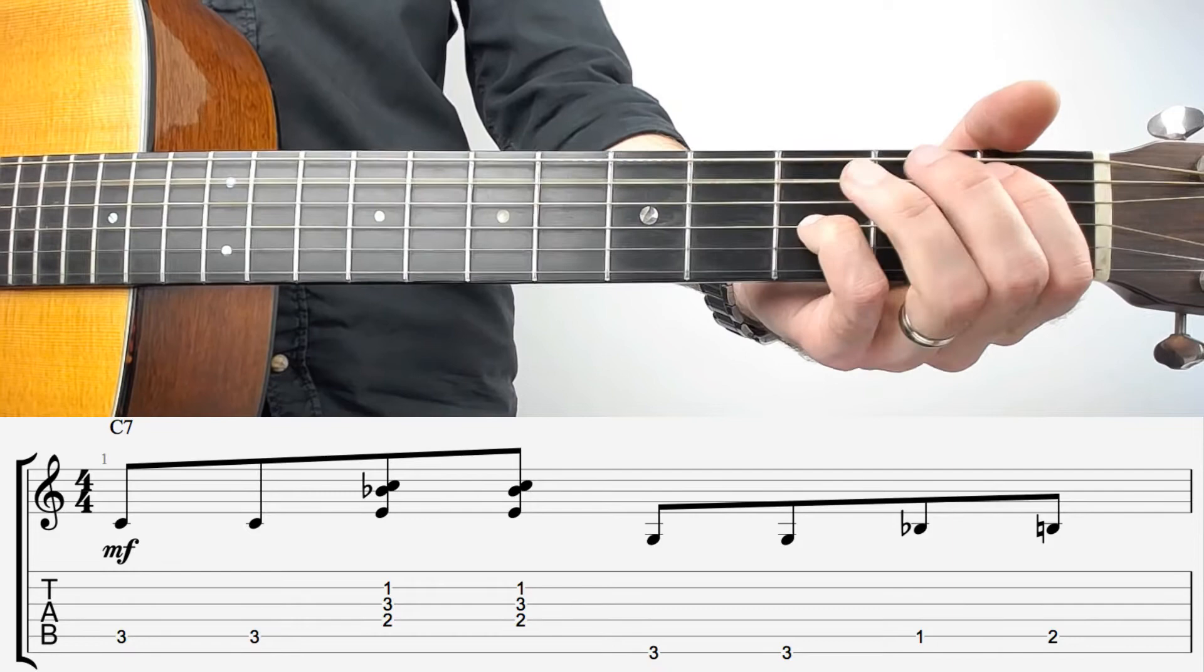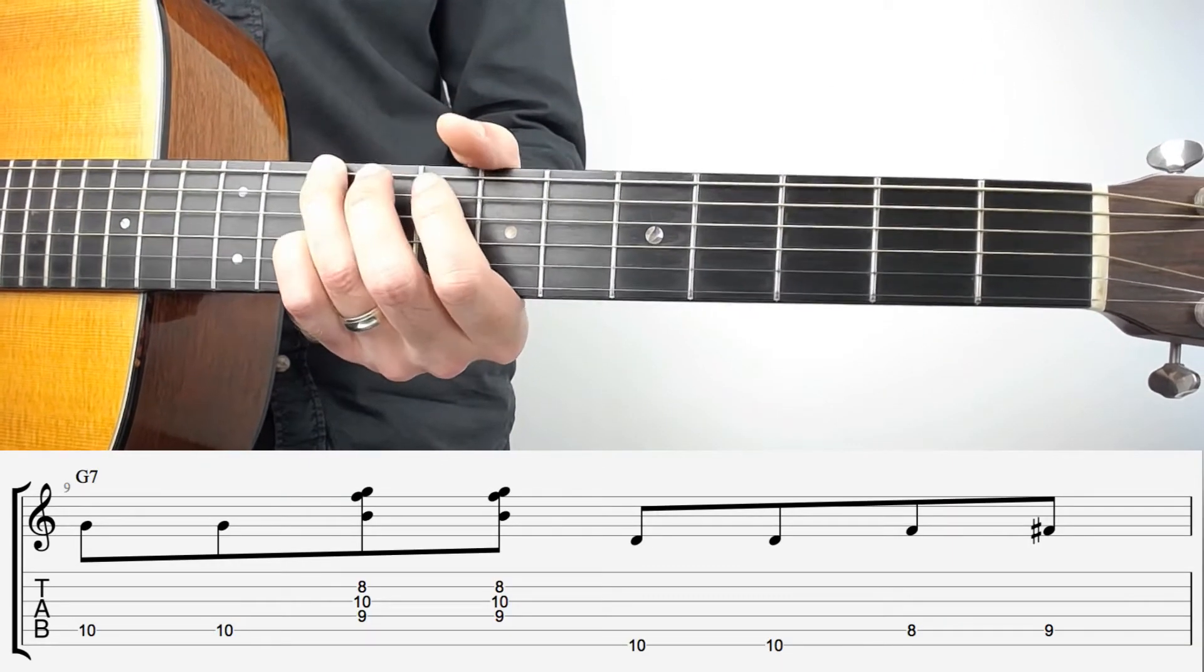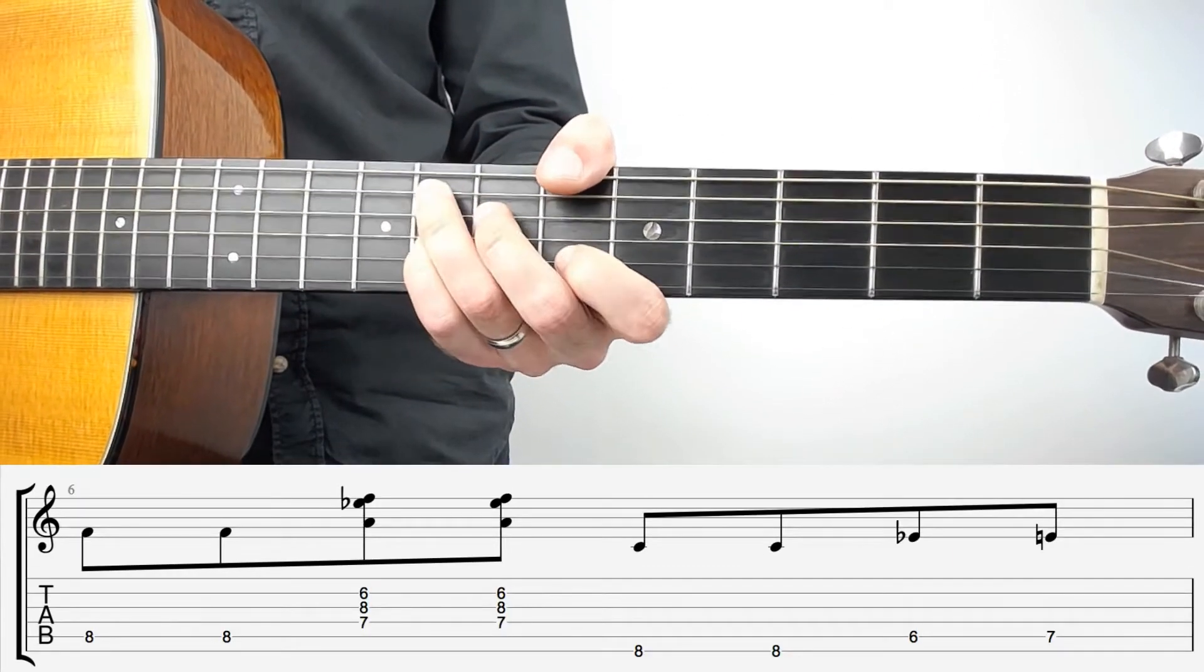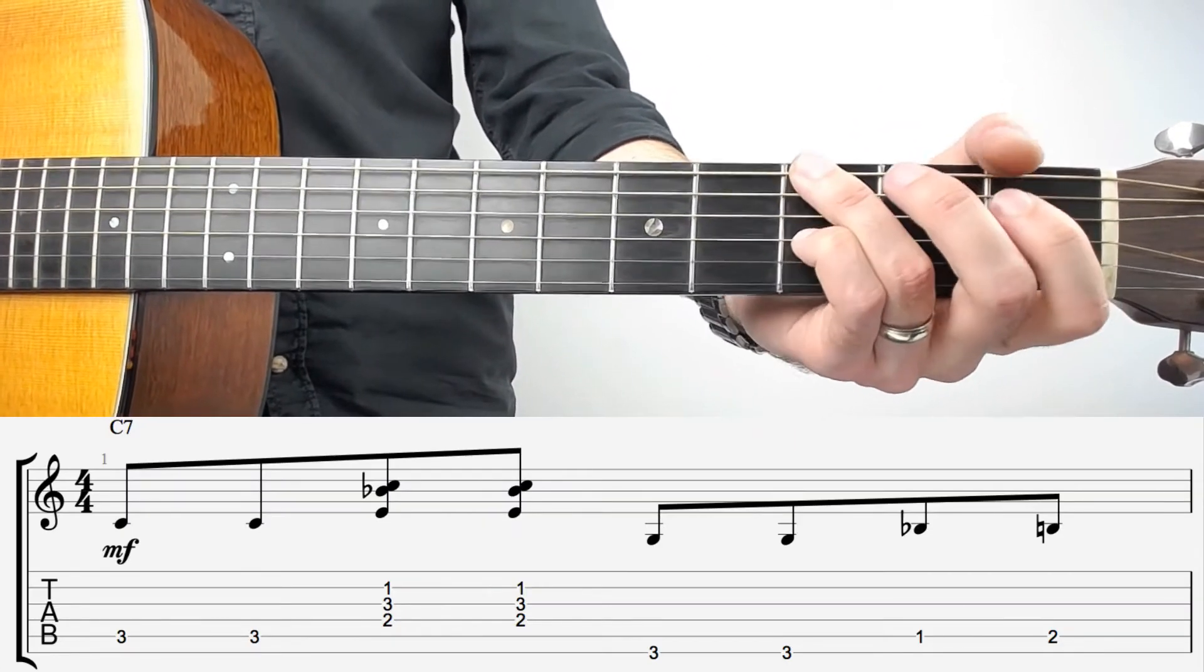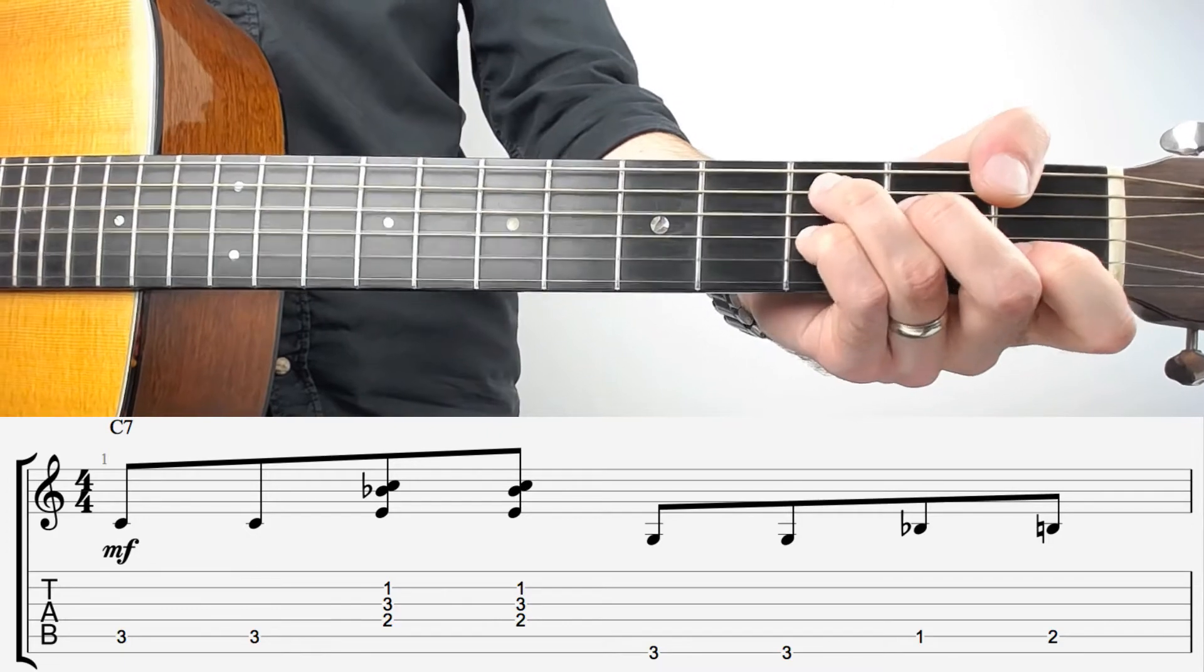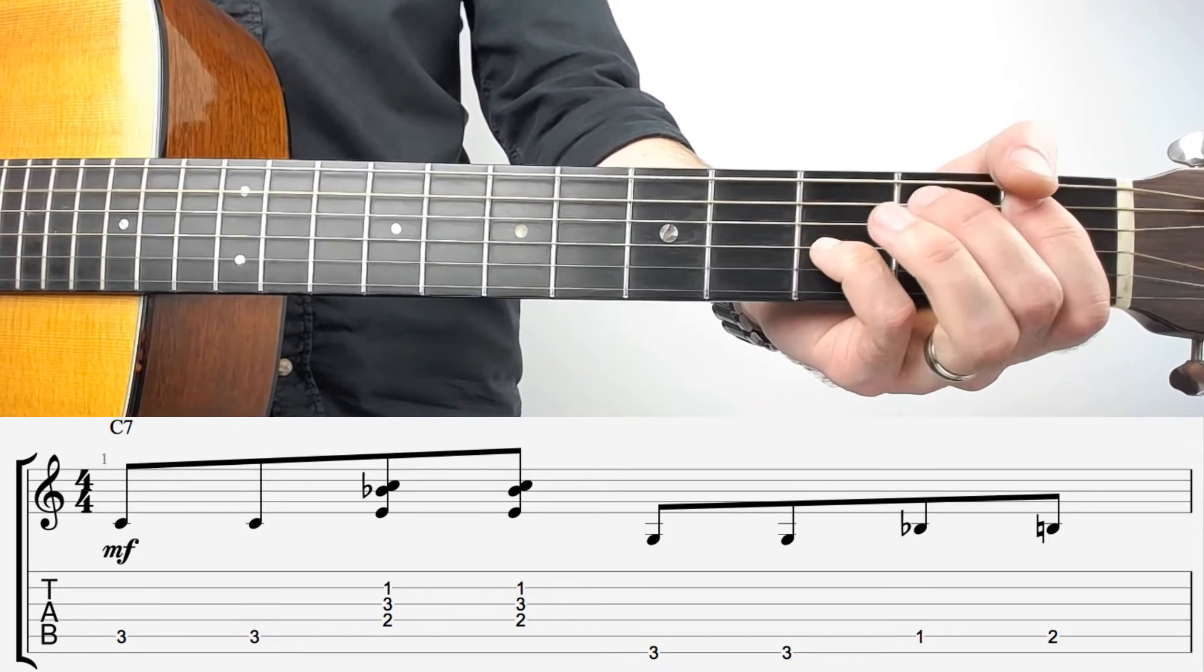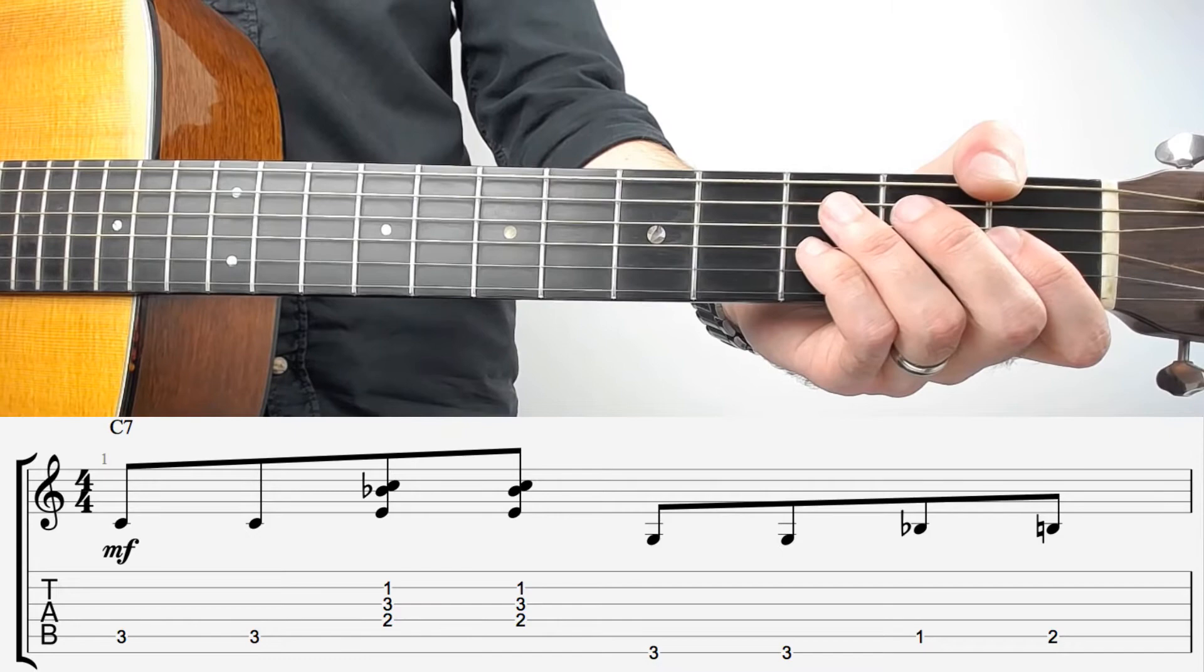And we're jumping way up to the G fret 10, back to F fret 8, and C way back in fret 3 again, twice around that. And there we go, there is C7 blues.